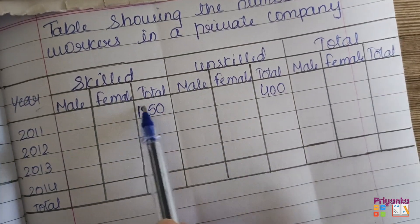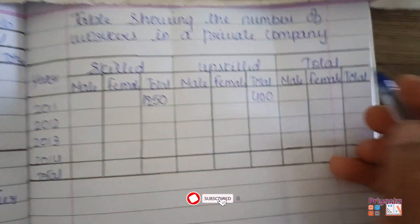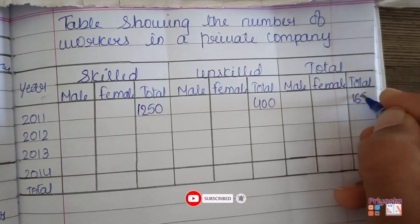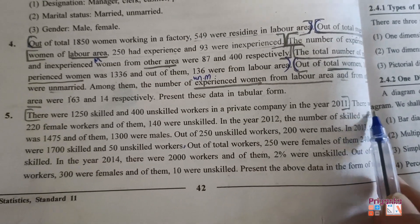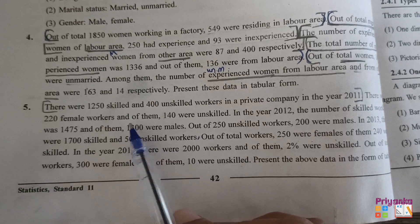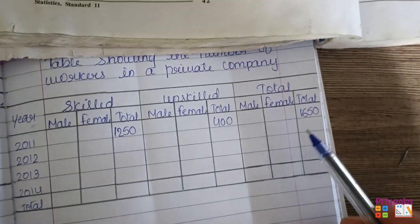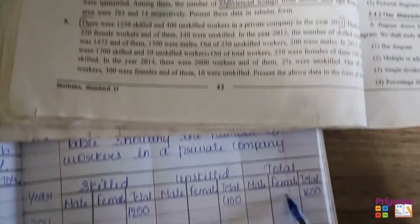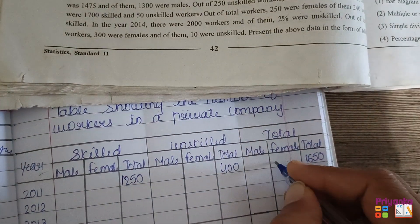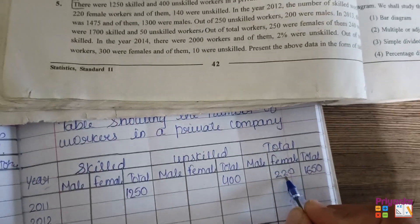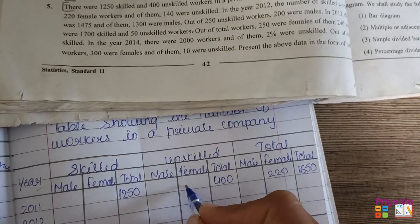Out of this information, if we make a total of these two, we can get the total number of skilled and unskilled workers, which would be 1650. Moving to the next information: there were 220 female workers and of them 140 were unskilled. So here we will put 220 — they are talking about the total number of females.